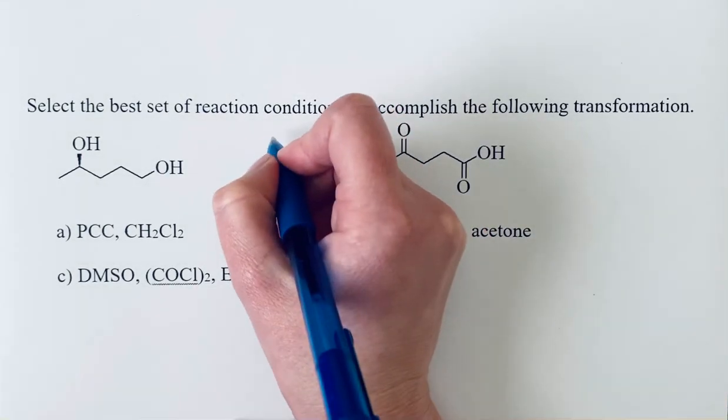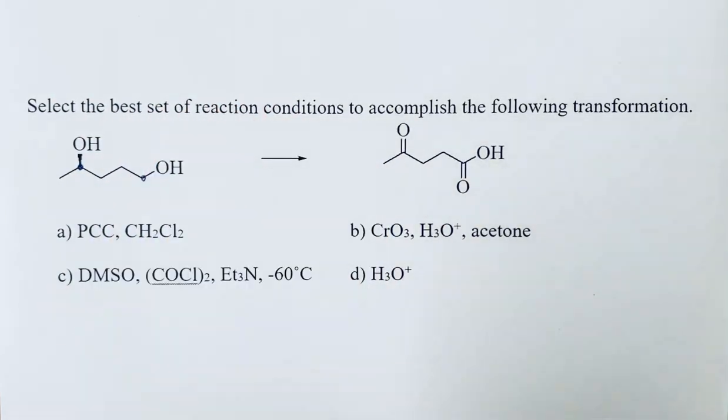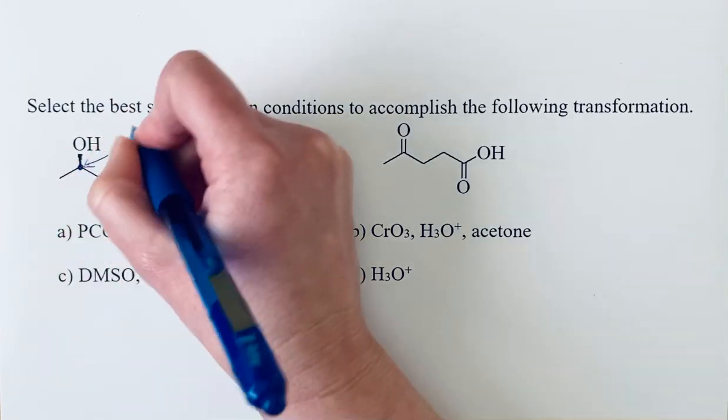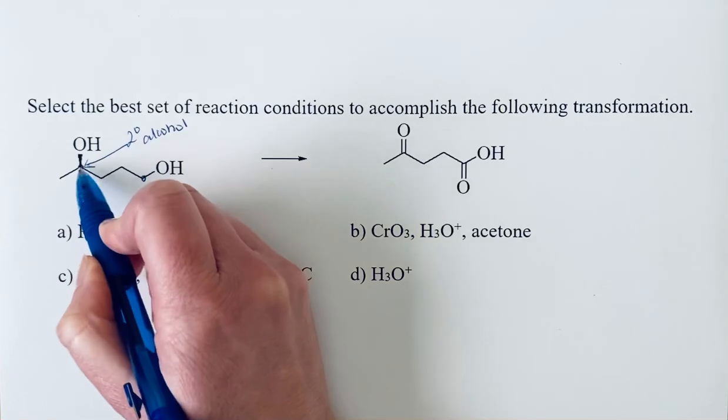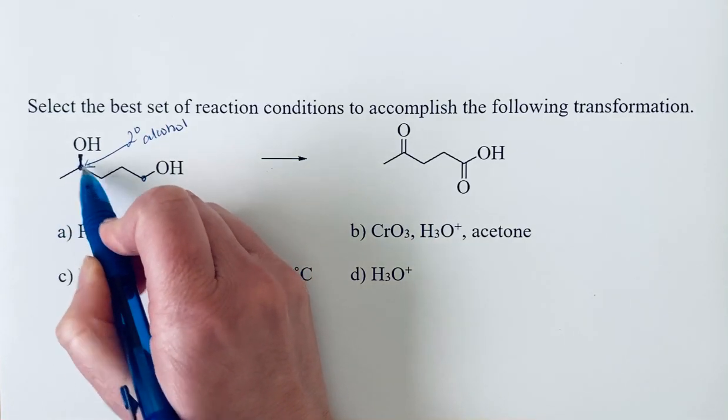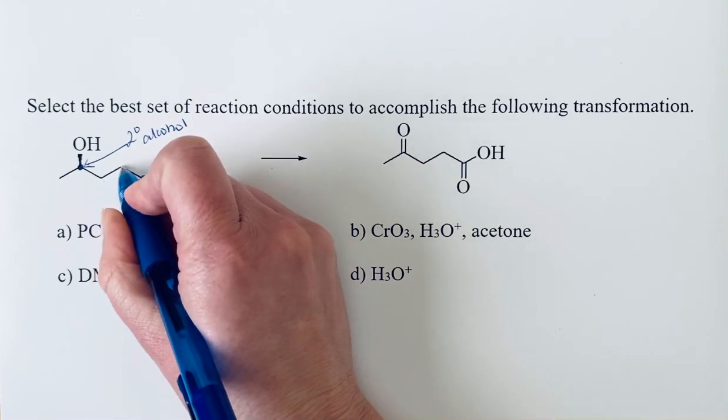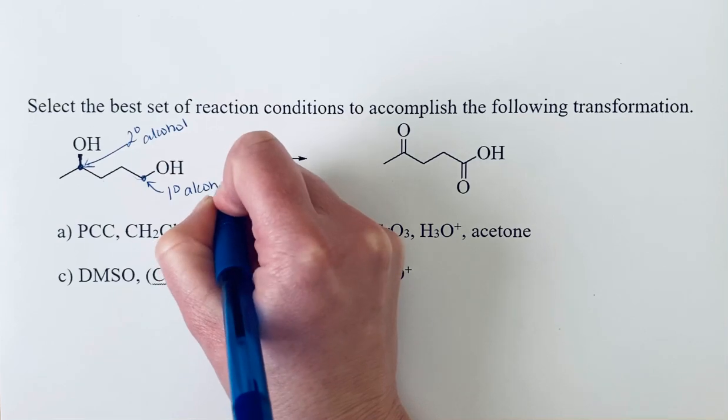We are starting with a molecule that has two alcohols. We want to identify what the substitution of these alcohols are. The first one is a secondary alcohol because that carbon atom has bonds to two carbons, and the other alcohol has bonds to only one other carbon atom, so that is a primary alcohol.